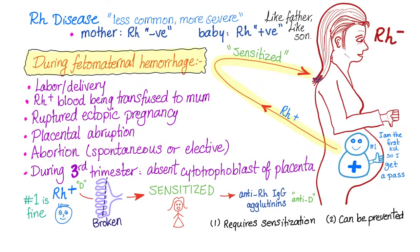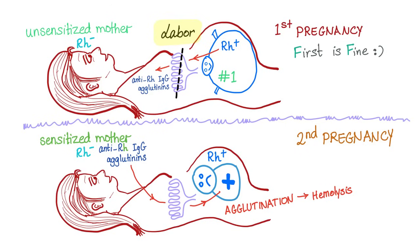RH disease can be prevented. Since the first pregnancy is fine, we have time to prevent this from happening in second, third, fourth, and subsequent pregnancies. The incidence is zero in the first pregnancy — provided there is no prior termination, ruptured ectopic pregnancy, absent trophoblast, or RH positive blood transfusion. In the second pregnancy, about 3% of babies will get hemolytic disease of the newborn; by the third pregnancy, 10%. The incidence increases with subsequent pregnancies.